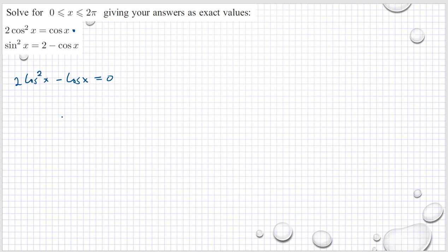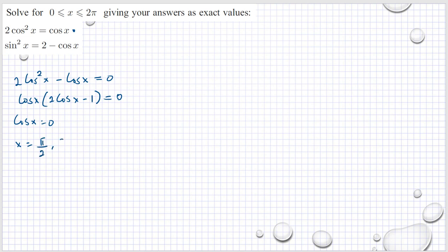We have cosine x as our common factor, then we have cosine x times (2 cosine x minus 1) equals 0. It's just so similar to the examples I solved in my previous videos. So we have cosine x is equal to 0, which gives us x equal to pi over 2 and 3 pi over 2, that means 90 degrees and 270 degrees — that's where cosine is zero.